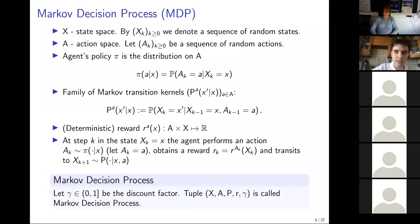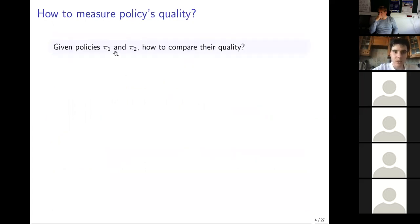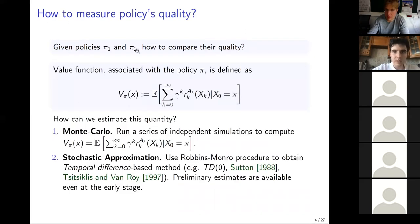Если марковский процесс с конечным горизонтом, дискаунт может быть равен единице. Если горизонт бесконечный, то, как правило, рассматриваются задачи, где gamma меньше единицы. Естественная задача: если есть две политики P1 и P2, как понять, какая из них лучше? Естественный ответ — нужно сравнивать функции ценности (value functions).